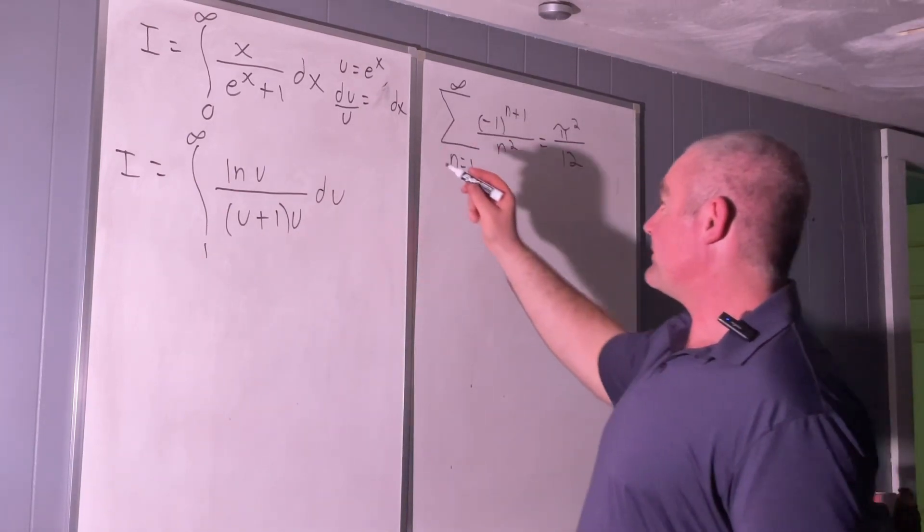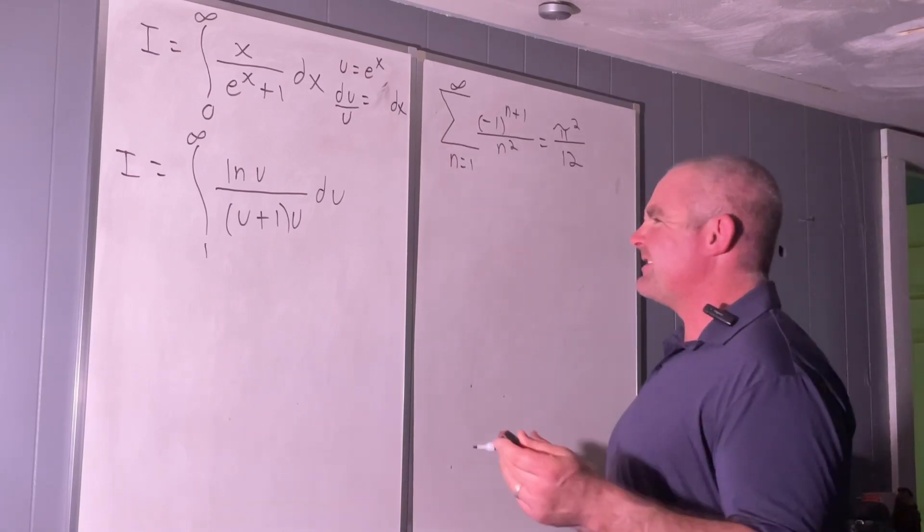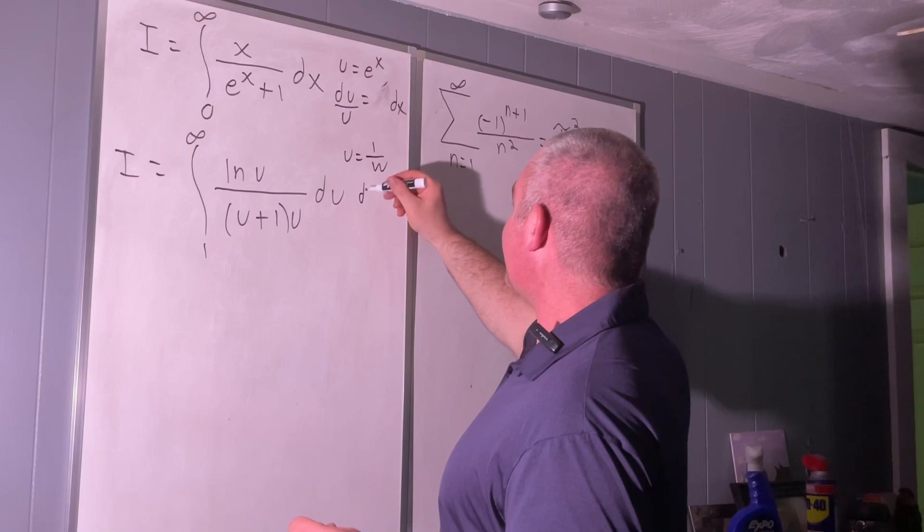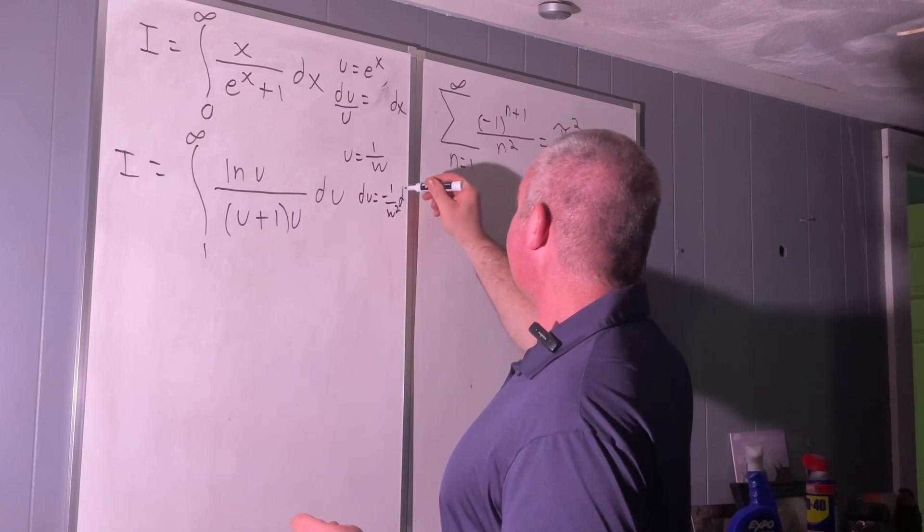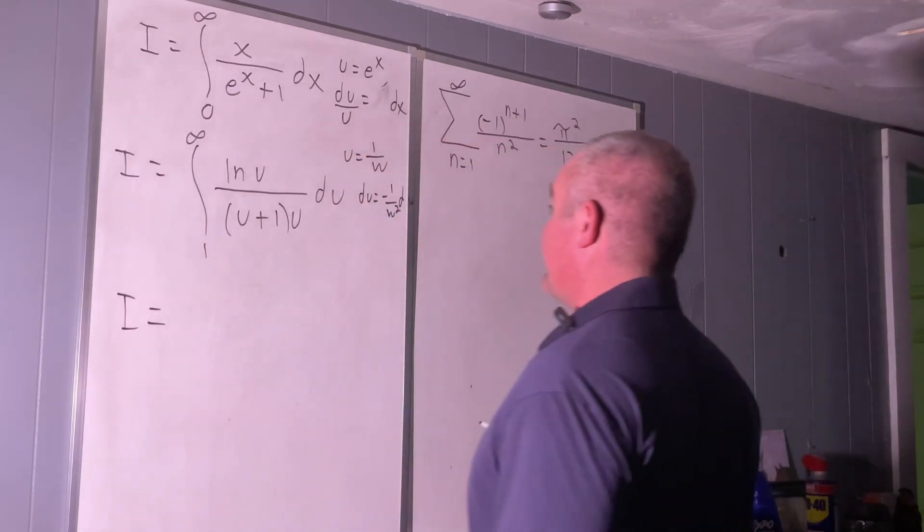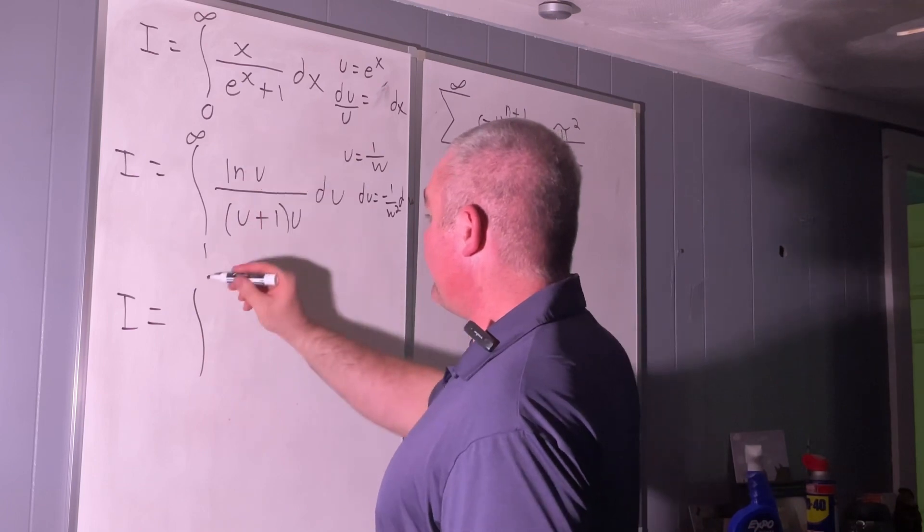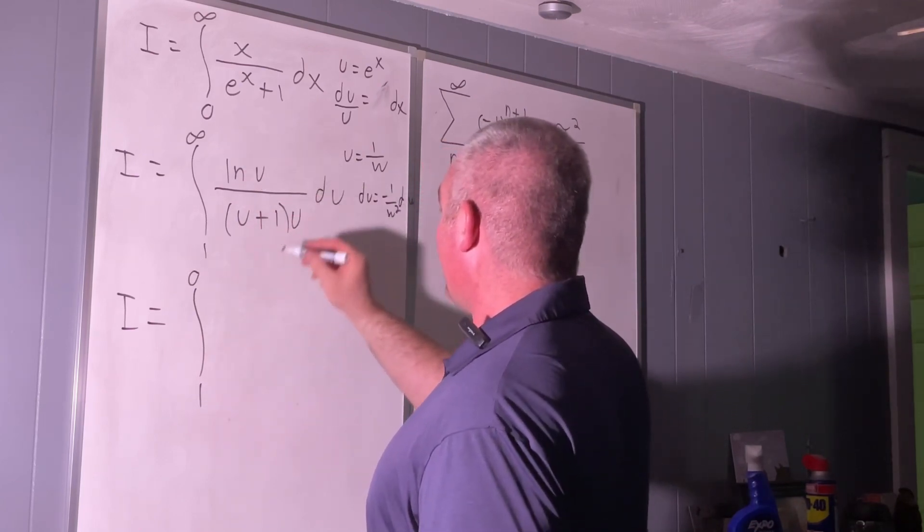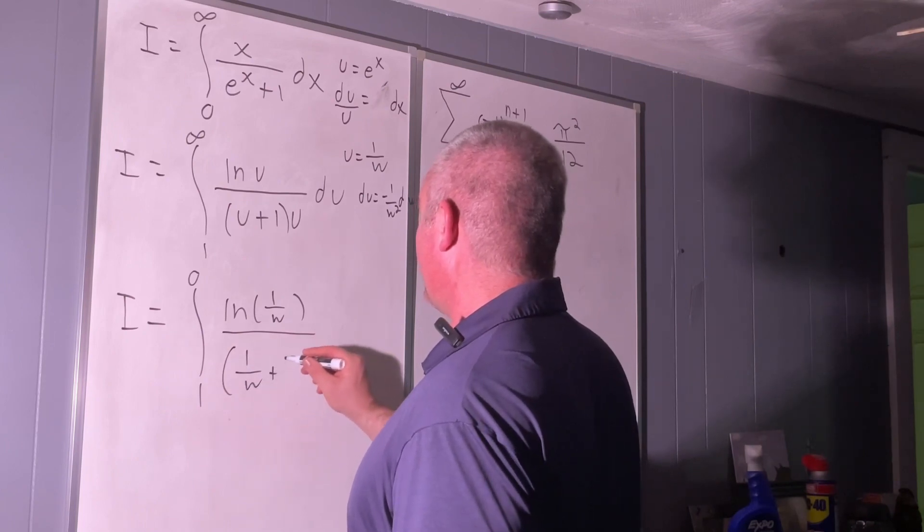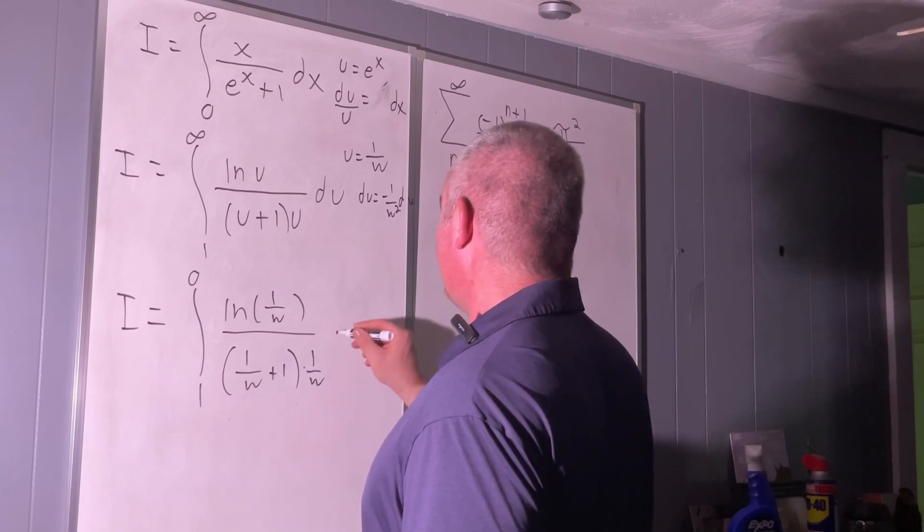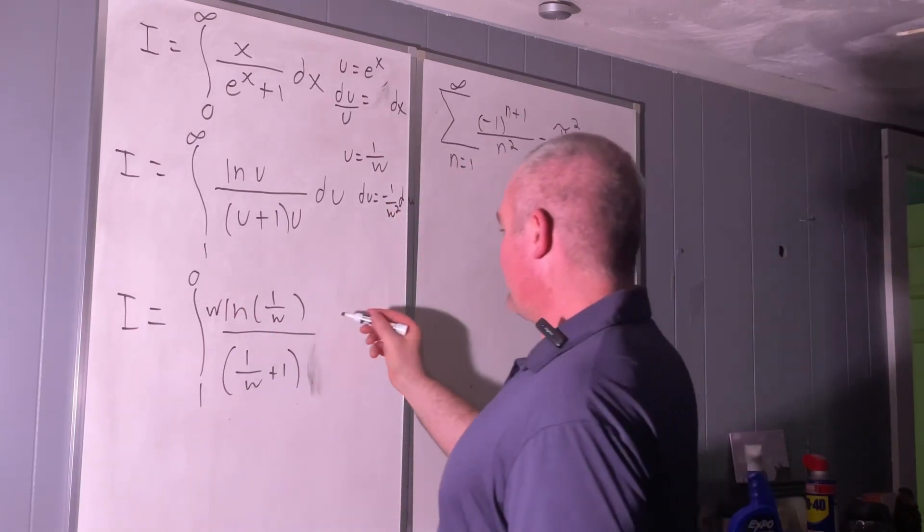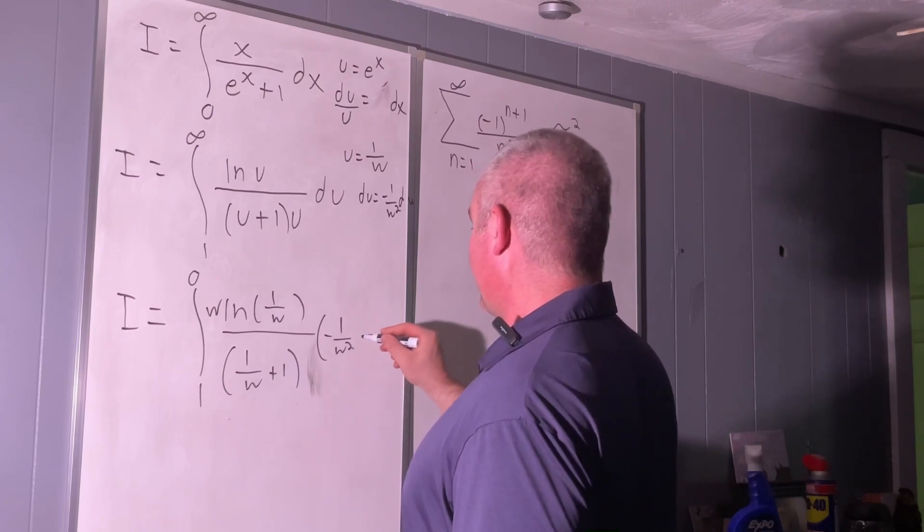Alright, our next substitution, and I realize you could have done this all in one substitution. I just like doing it this way better. We're going to set u equal to one over w. Therefore, du is equal to negative one over w² dw. Alright, well what's that going to give us? So now we're going to have I is equal to integral from one over infinity is zero, one over one is one. Natural log one over w over one over w plus one times one over w. And we'll just bring that to the top. And then we're going to have negative one over w² dw.